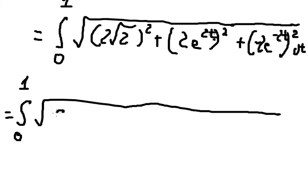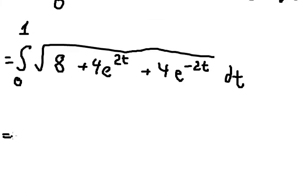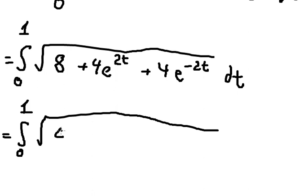Inside the square root we have: 0 squared gives 0, then 4e to the power of 2t, then 4e to the power of negative 2t. We can factor out the 4, so we take the square root of 4 which is 2.